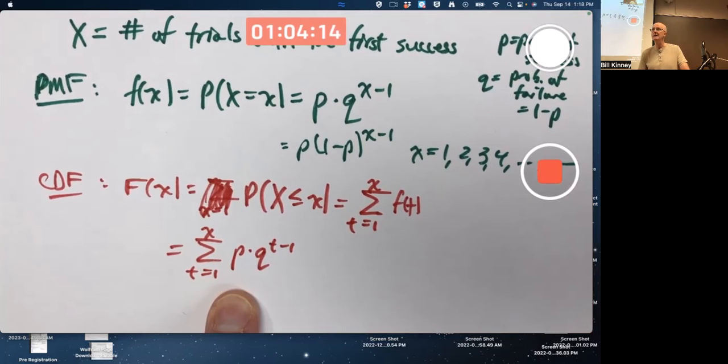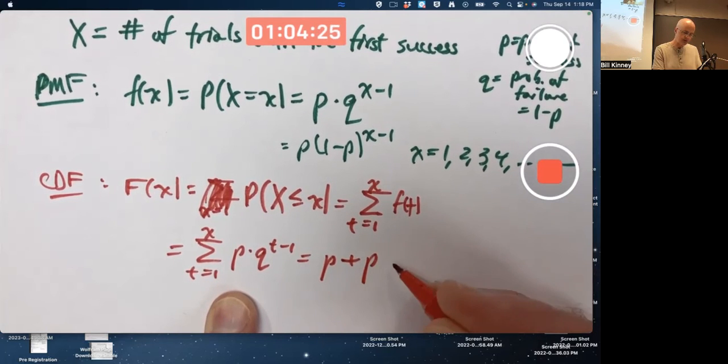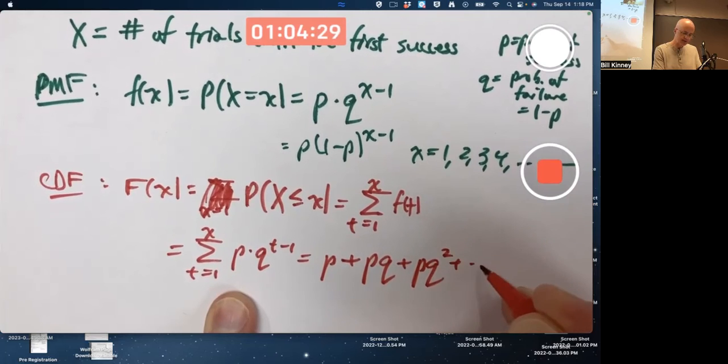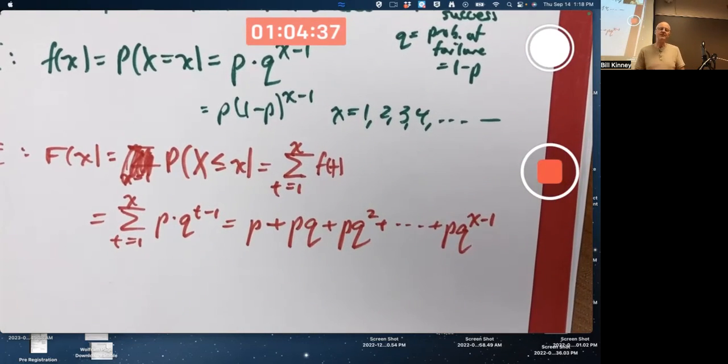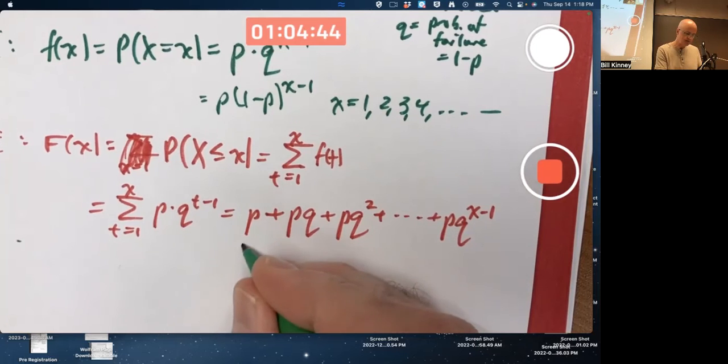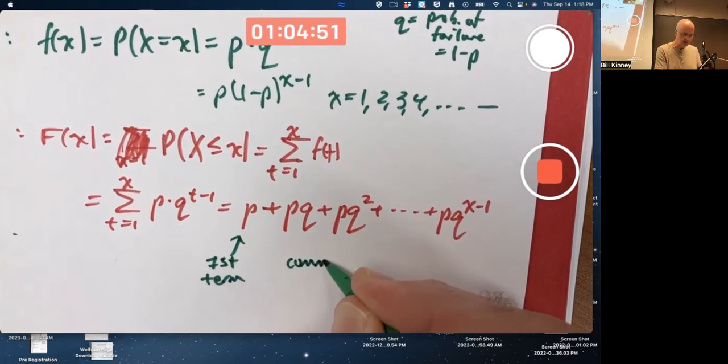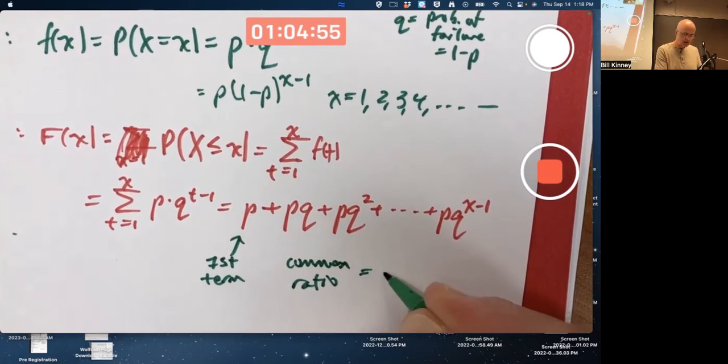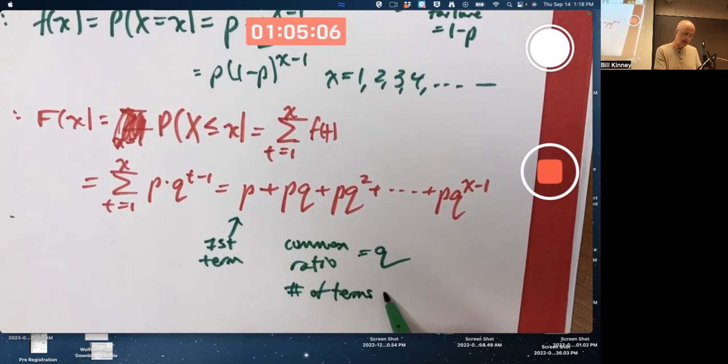That's why it's called the geometric random variable. Remember, geometric series from Calc two. If you write it out, this is P times Q to the zero, which is just P, plus P times Q to the first, plus P times Q squared, plus, et cetera. The last one is going to be P times Q to the X minus one. Replace T with X. That's a finite geometric series with first term P. There's your first term. Common ratio, it's called, Q. That's what you've got to multiply each term by to get the next term. And the number of terms is X of them.